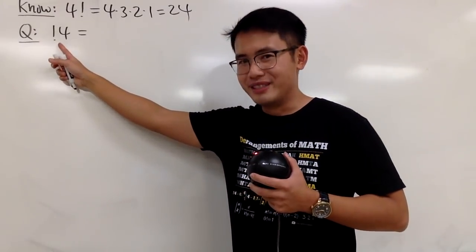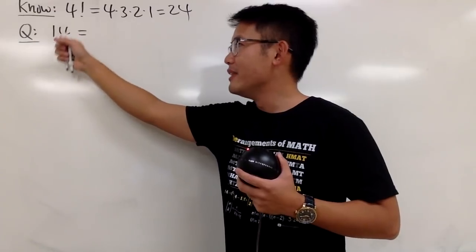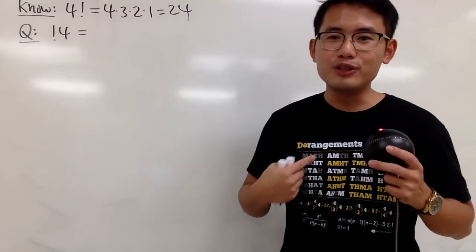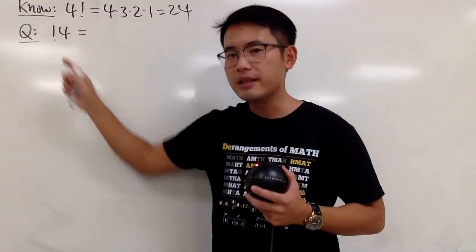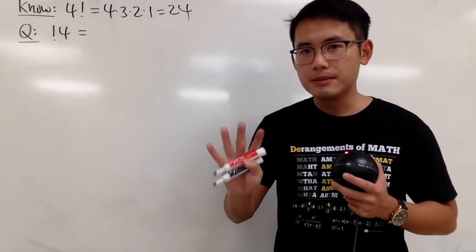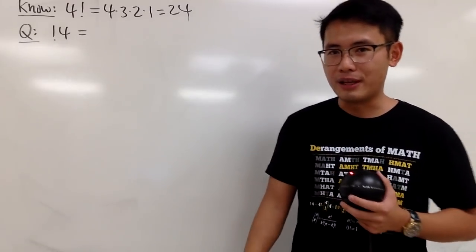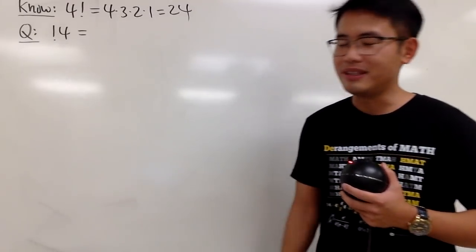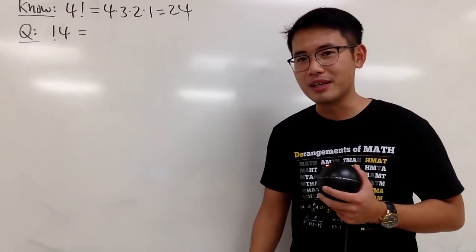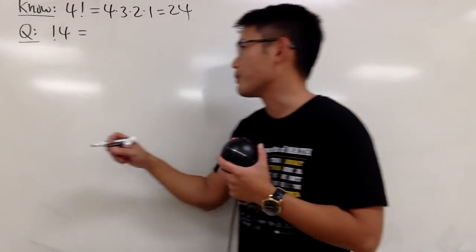Well, you see, this is kind of like the backwards, you put the factorial in the front. This right here is what we call the derangement. This means we are trying to calculate the number of ways to arrange 4 different items, but none of them goes back to its original place. So that's called the derangement, and now let me just show you guys a scenario so that it's easier for us to relate to what we are trying to compute.